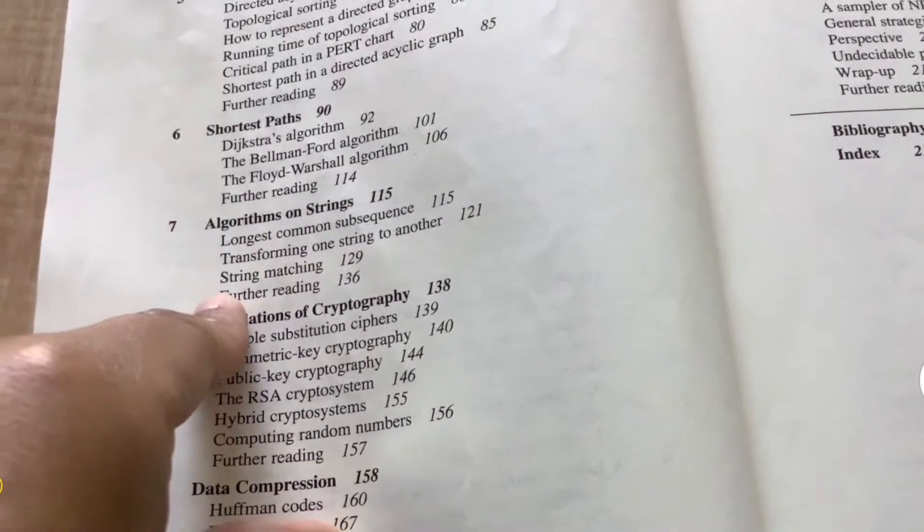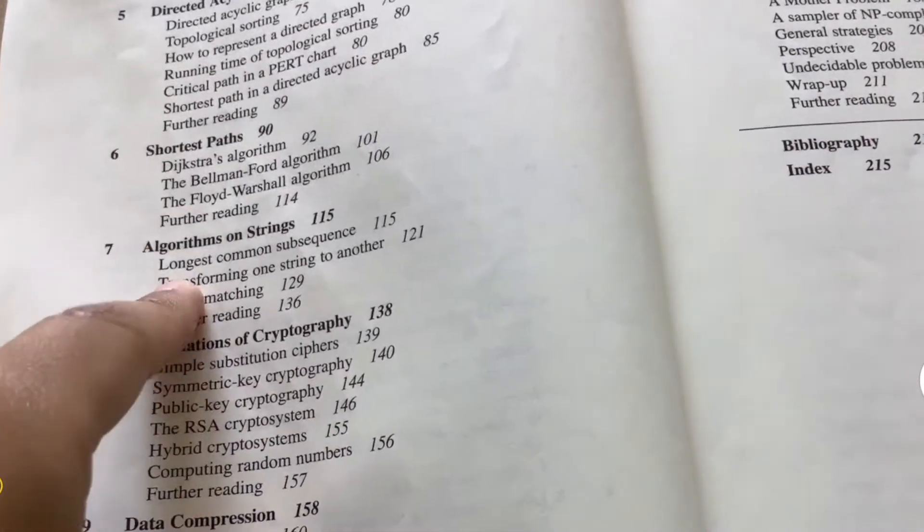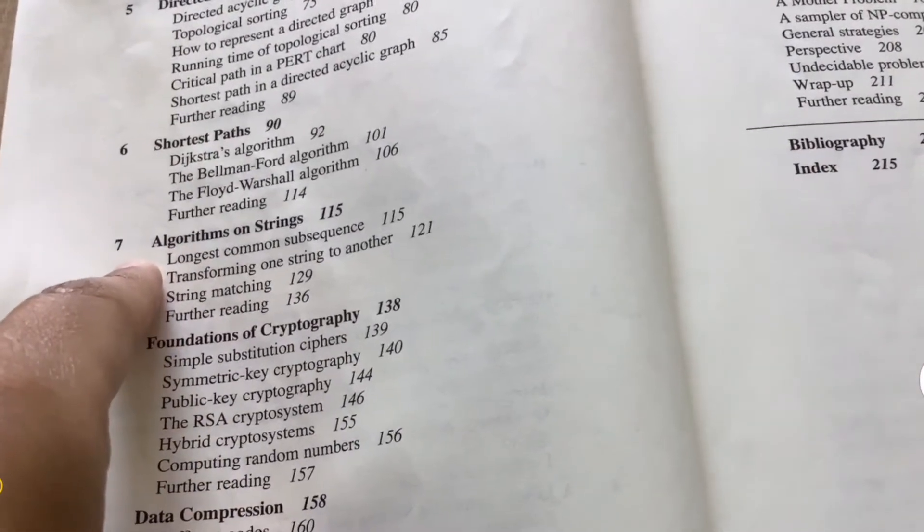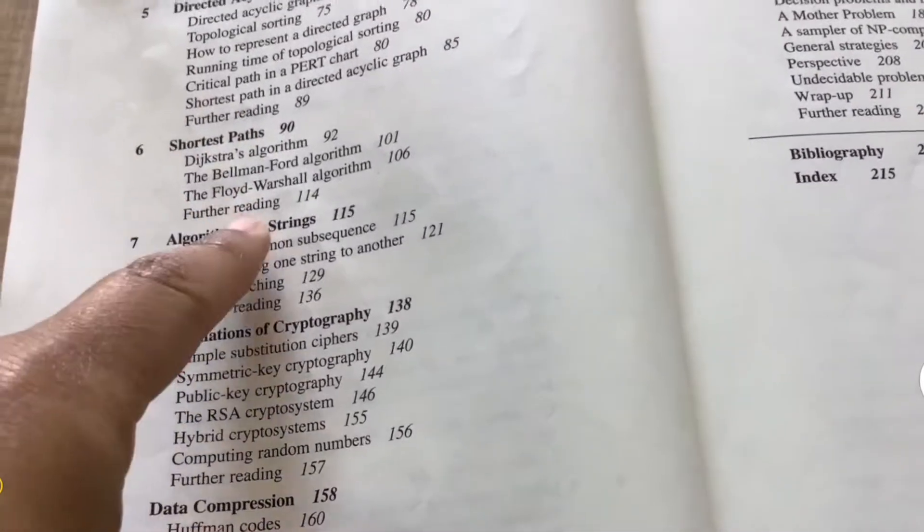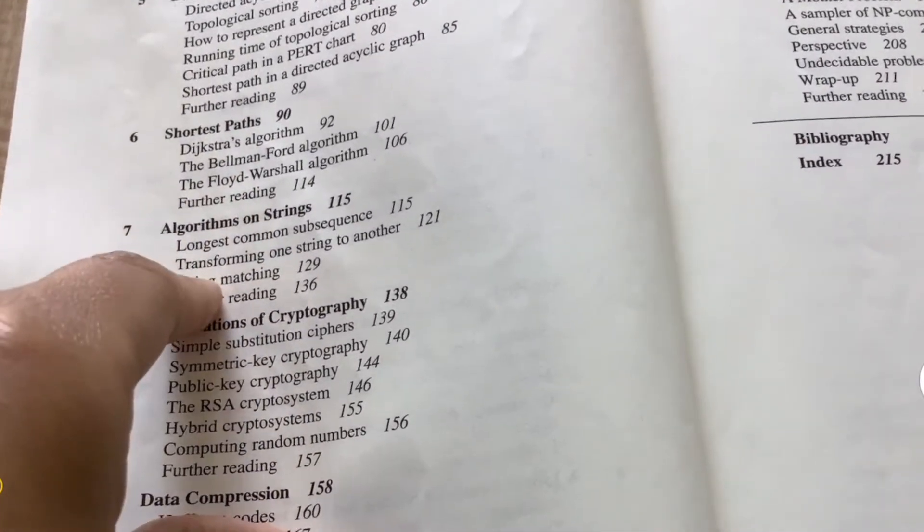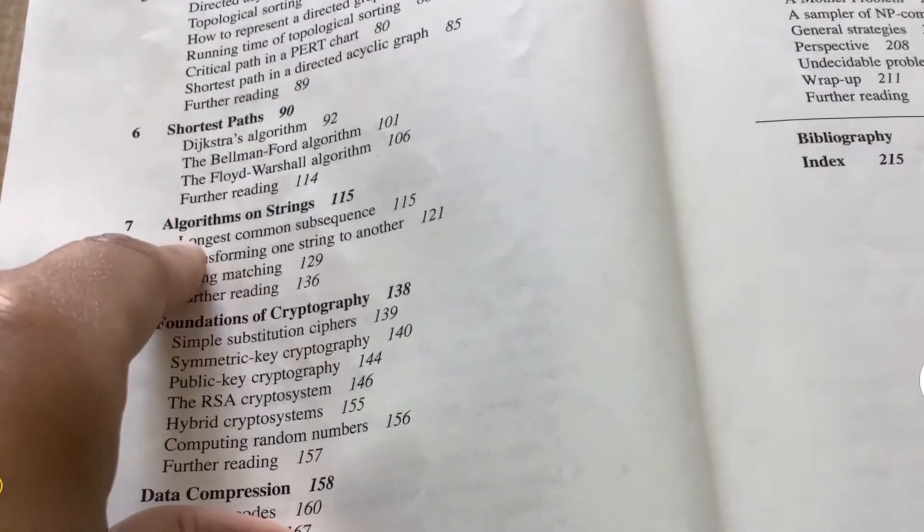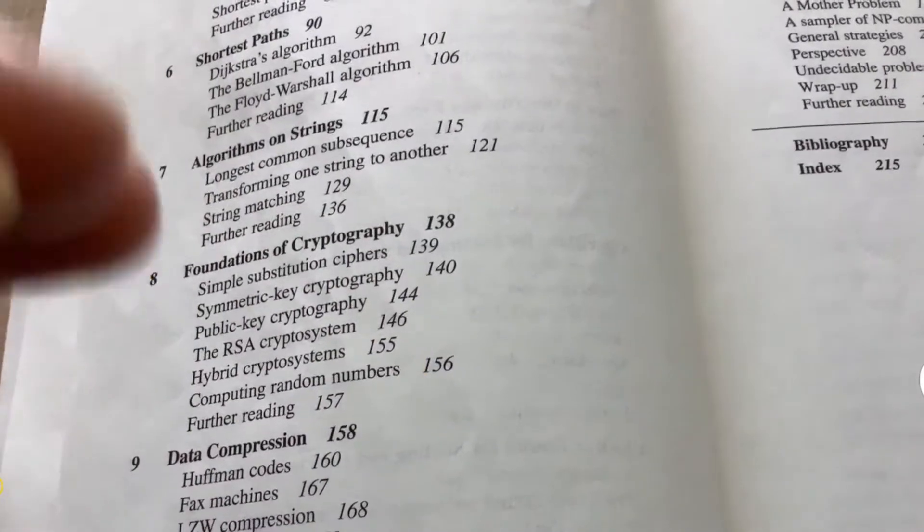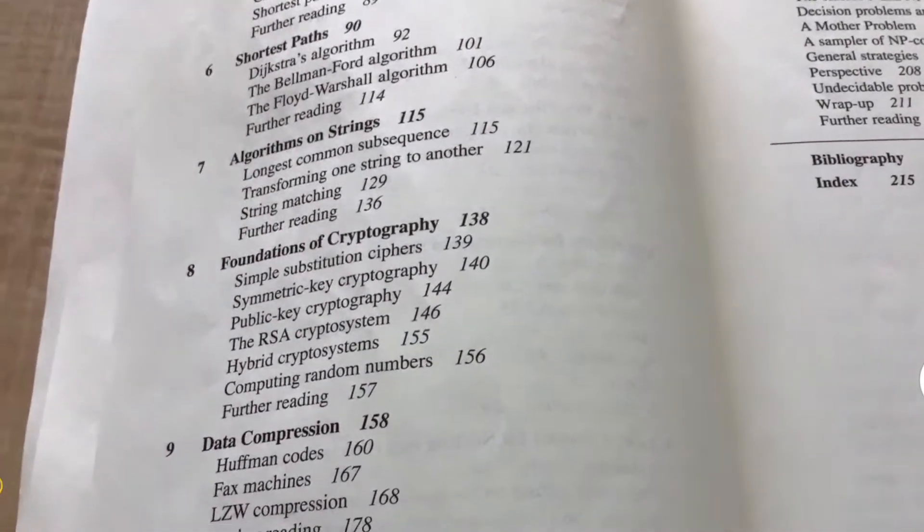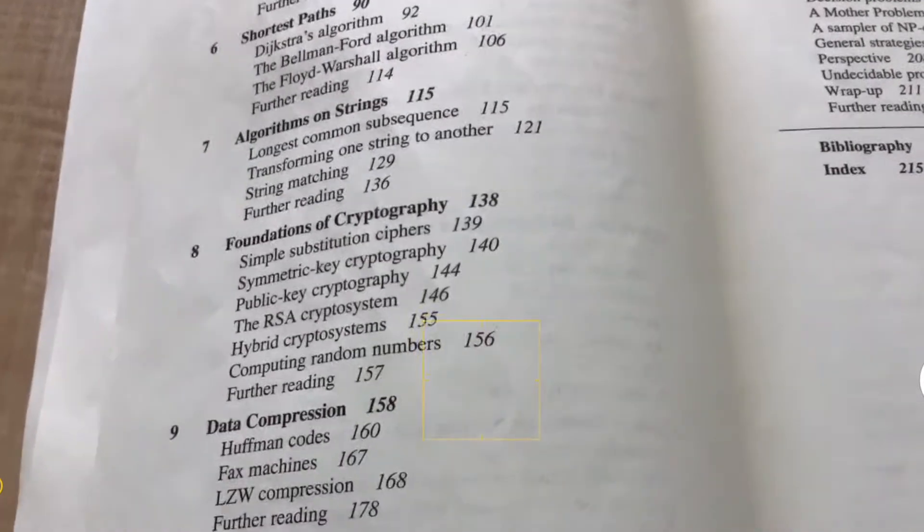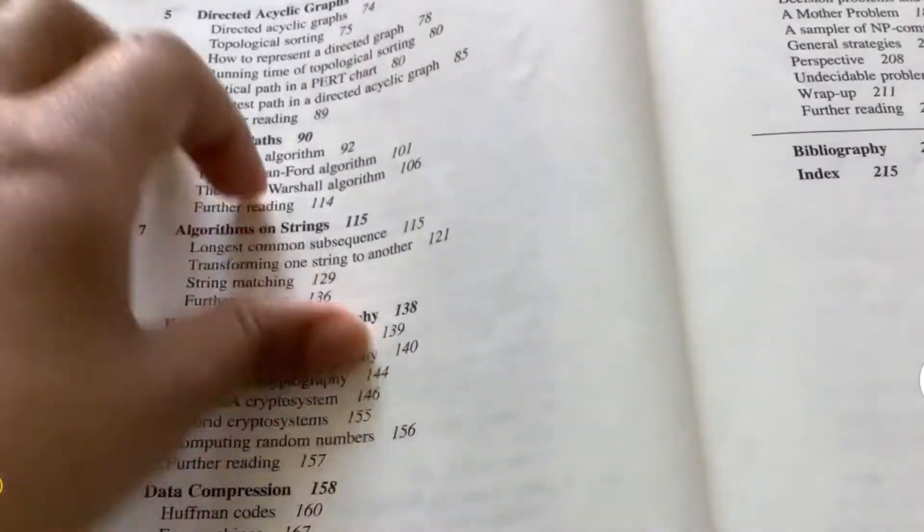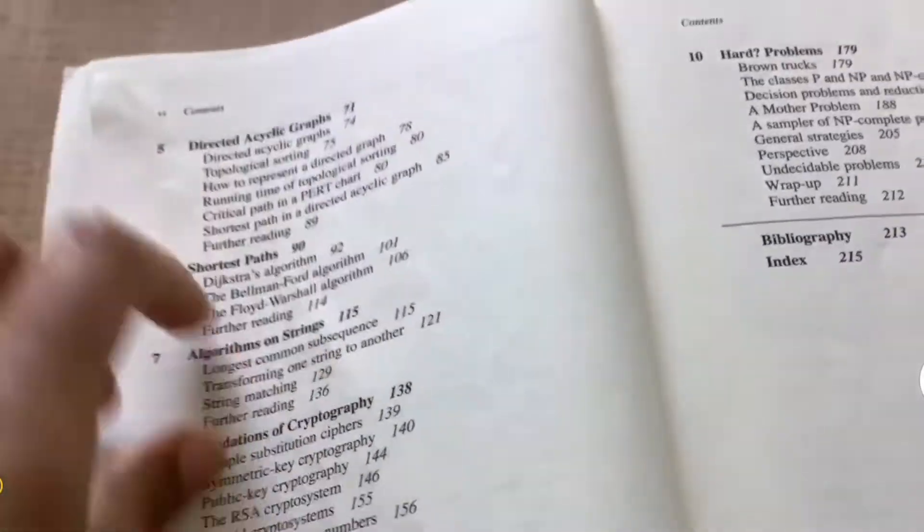Then after that, the algorithms on string section, this was an awesome section. Usually, yeah, so the first one, longest common subsequence, and then edit distance, how to transform one string to another, and then string matching. I think the explanations were awesome with this chapter. And the examples also with the detailed explanation of how would we apply the algorithm for each example. So yeah, this one was one of the, so I think this one, along with the chapter on sorting with binary search, I think those two are my favorite chapters of this book.